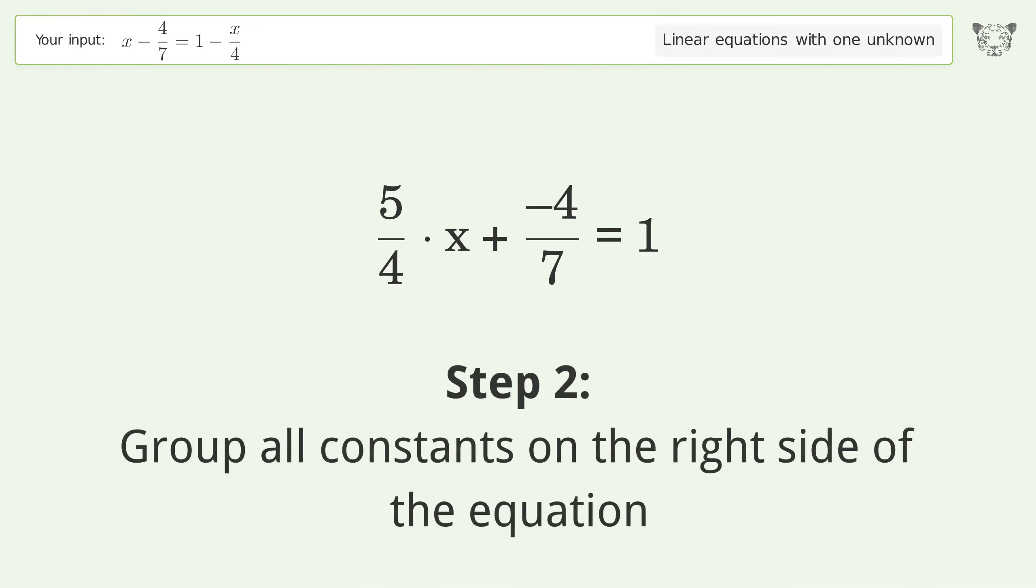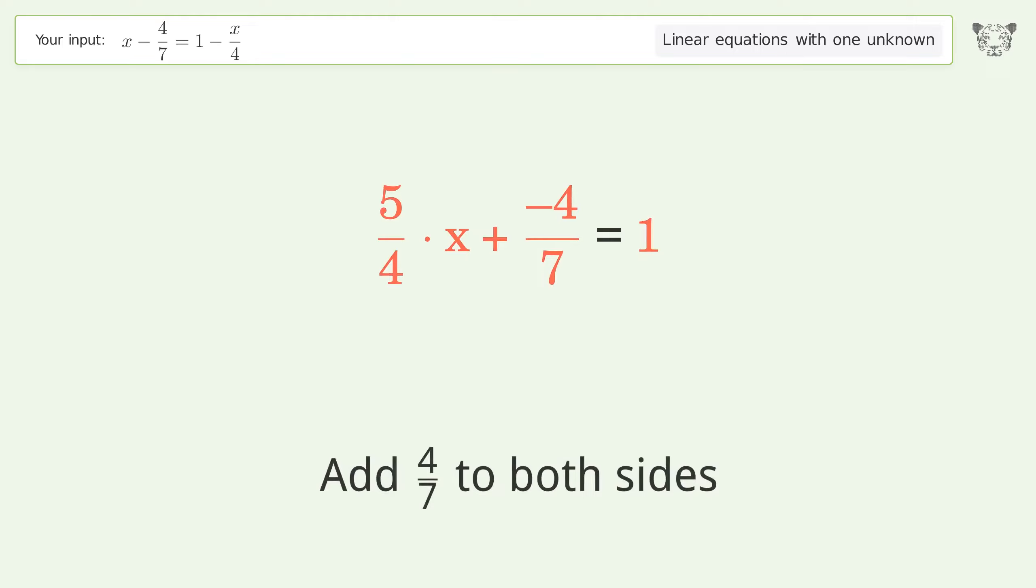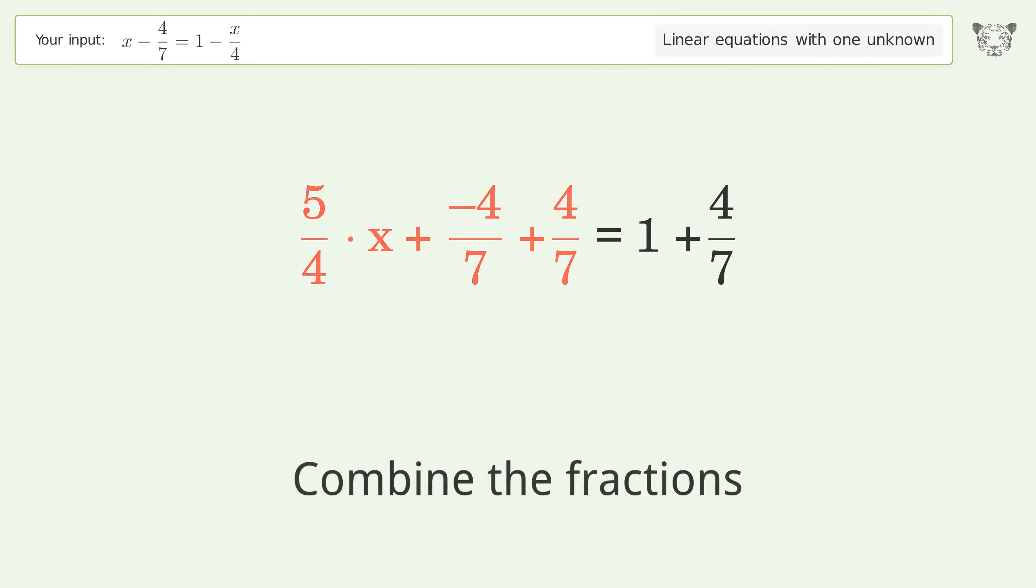Group all constants on the right side of the equation. Add 4 over 7 to both sides. Combine the fractions. Combine the numerators.